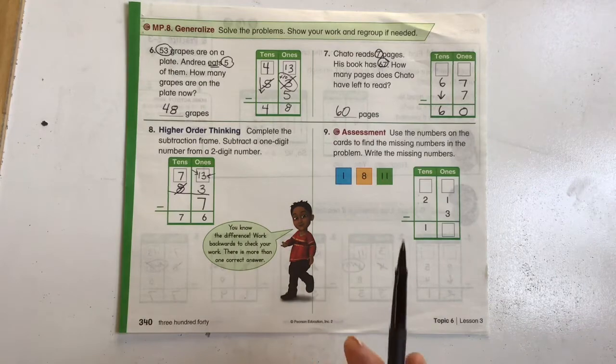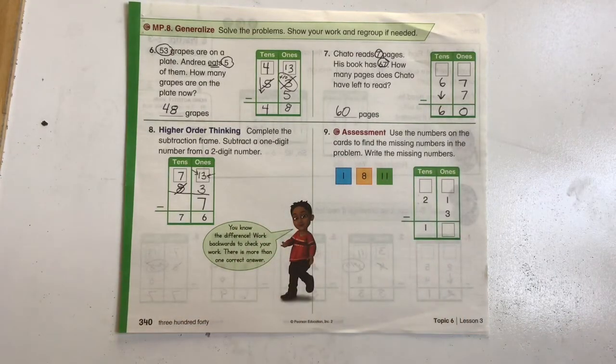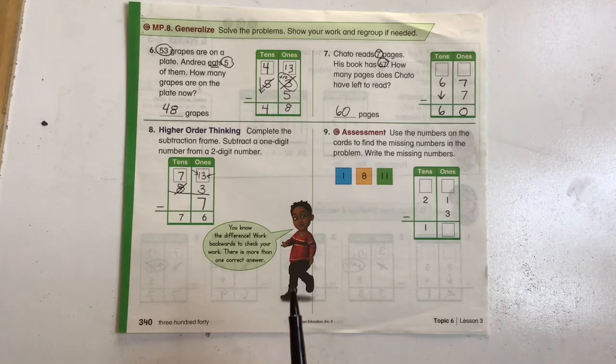Okay, let's go to our assessment. Again, they will have a question that is very similar to this on their unit assessment. It says use the numbers on the cards to find the missing numbers in the problem. So we can go through and kind of take a look at it right off the bat. We've got 1 minus 3.